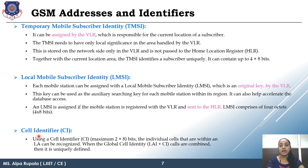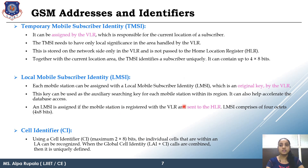Last one is CI — that is Cell Identifier. You already know that a local area is further subdivided into cells and each cell also has a unique identifier number. If we want to uniquely identify a particular antenna, we can use the LAI plus CI combination for unique identification. So these are all the GSM addresses and identifiers. Some of these identifiers we will use in our later topic, that is call routing.